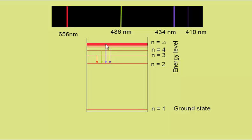These lines are the visible lines given off by hydrogen. They're called the Balmer series, because it was a man called Balmer who discovered them.